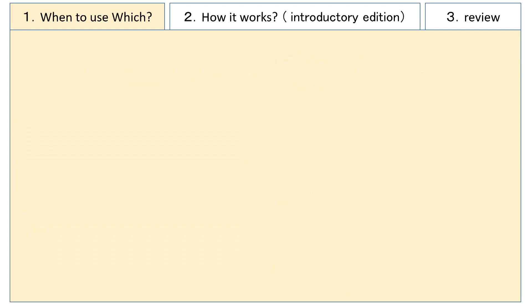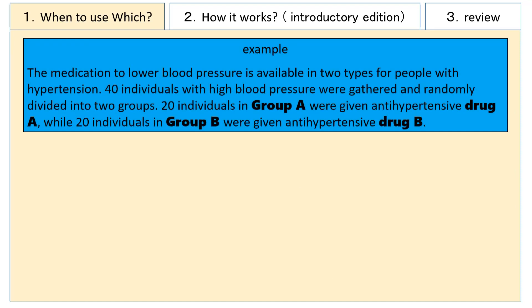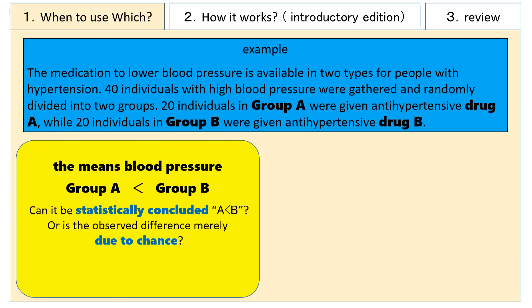Here is an example to further illustrate this concept. There are two types of medication for lowering blood pressure in people with hypertension. We gathered 40 people with hypertension and randomly divided them into two groups: 20 people in group A took medication A, and 20 people in group B took medication B. Afterwards, we measured the blood pressure of these 40 people. Let's say the average blood pressure of group A was lower than that of group B. Can we conclude statistically that group A has lower average blood pressure, or is this difference within the range of error or chance? The t-test is used to settle such debates.